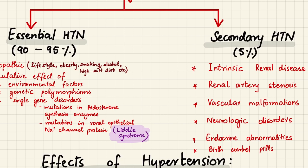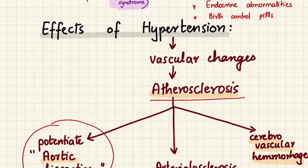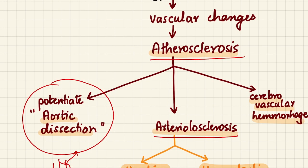Secondary hypertension has an identifiable cause and accounts for 5% of cases. Causes include intrinsic renal disease, renal artery stenosis — which activates the renin-angiotensin-aldosterone system causing hypertension — vascular malformations such as coarctation of the aorta, neurological disorders such as sleep apnea, psychogenic disorders, and endocrine abnormalities including hyperaldosteronism. Birth control pills and oral contraceptives are also linked with hypertension.